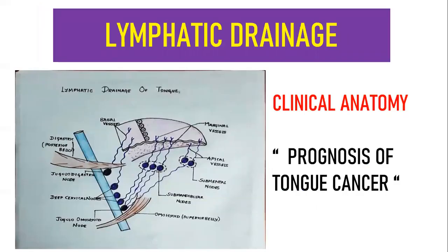Moving on to lymphatic drainage — this has been asked separately as an important short note twice in the university exam. As far as your tongue is concerned, you have four groups of vessels: your apical vessels, marginal vessels, central vessels, and basal vessels. You need to know from which area these vessels drain and to which node they deliver the drainage. Apical vessels drain the apex of the tongue. Marginal vessels drain the margins. Central vessels drain the central area. Basal vessels drain the posterior one-third.